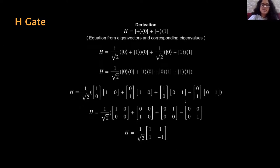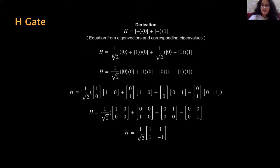We can derive the H gate from its definition. It works in the X and Z axes: applying H on ket0 gives ket plus, and applying H on ket1 gives ket minus. Summing these and substituting the values — replacing ket plus with its expression and doing the required multiplications — we then put in the values of ket0, ket1, and their bra versions, multiply the four resulting terms, and perform the addition to obtain the H matrix as expected.